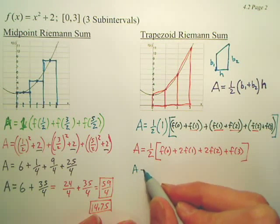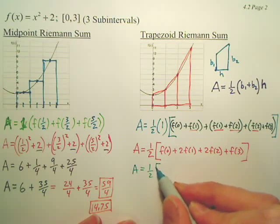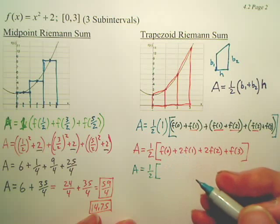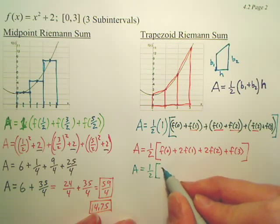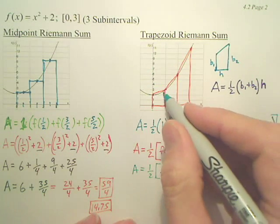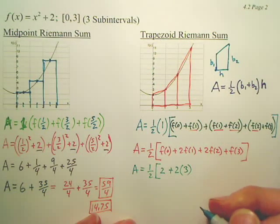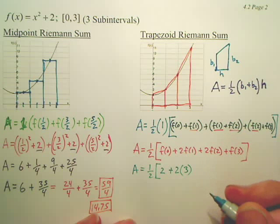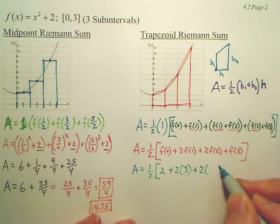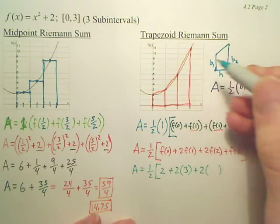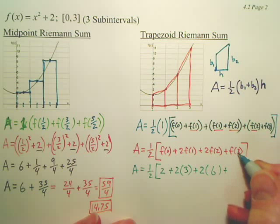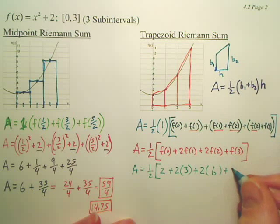So you have area, one half. What is f of 0? That's 2. By looking at the graph, you can see it. f of 1, that's 3. If you didn't have a nice graph, you'd be plugging it in. f of 2 is 6. And f of 3 is 11.